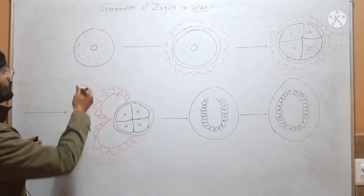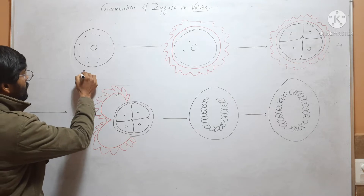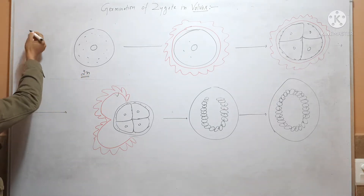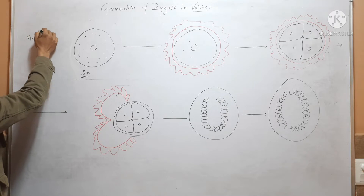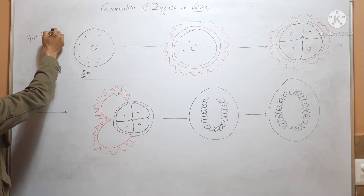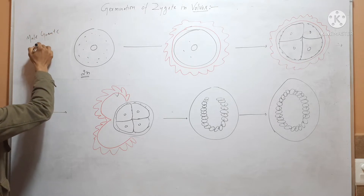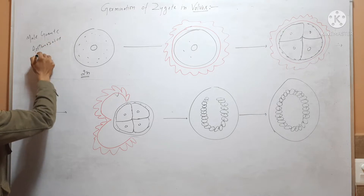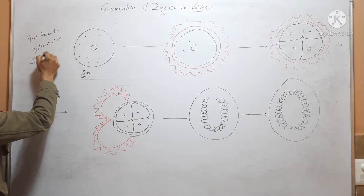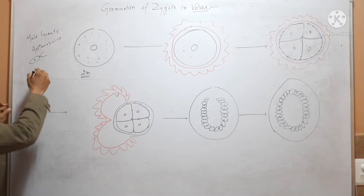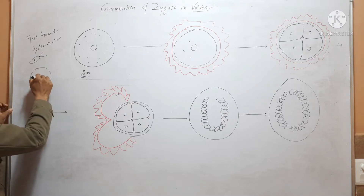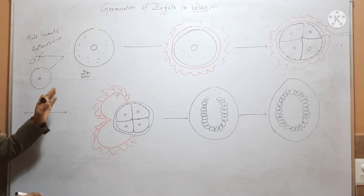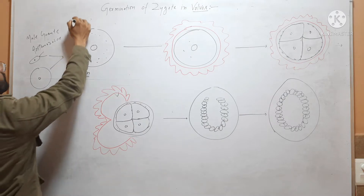This is the zygote. We know that it is 2N. It is formed by fusion of male gamete, or antherozoid, which are smaller structures, haploid and biflagellate, and an egg. By fusion of these two, by the process of fertilization, the zygote is formed.